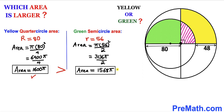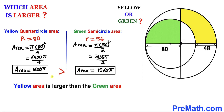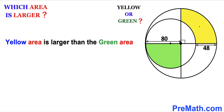We can now see that the yellow quarter circle area — 1600π — is larger than the green semi-circle area — 1568π. Therefore, we conclude that the yellow area is larger than the green area. Thanks for watching and please don't forget to subscribe to my channel for more exciting videos. Bye!